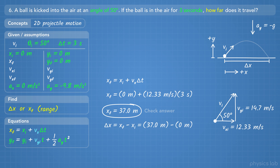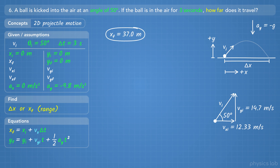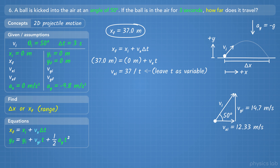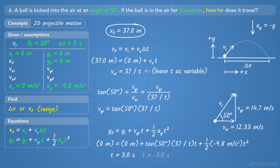How can we double check our answer? Based on the given information, we can't really think through whether this value makes sense. But we can plug this answer into the equations we used and work backwards to see if we get one of the given values. Let's start with the range and see if we get 3 seconds for time. Using this equation, we plug in 37 meters for the final x position, then use the angle of 50 degrees and the tangent relationship. Plugging that into this equation and solving for time, we get 3 seconds — the value we were given — so our final answer should be right. Keep in mind that you're plugging in rounded values, so you might be off a few decimal places, but you should be able to tell that it's close enough.